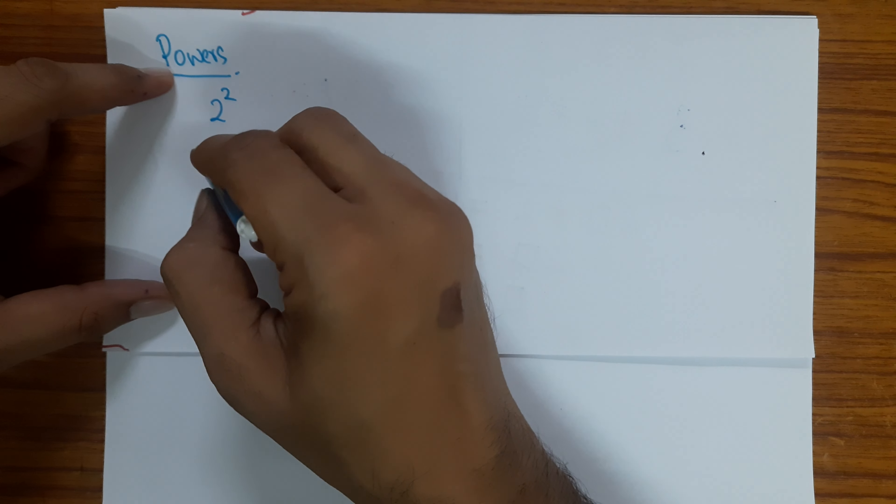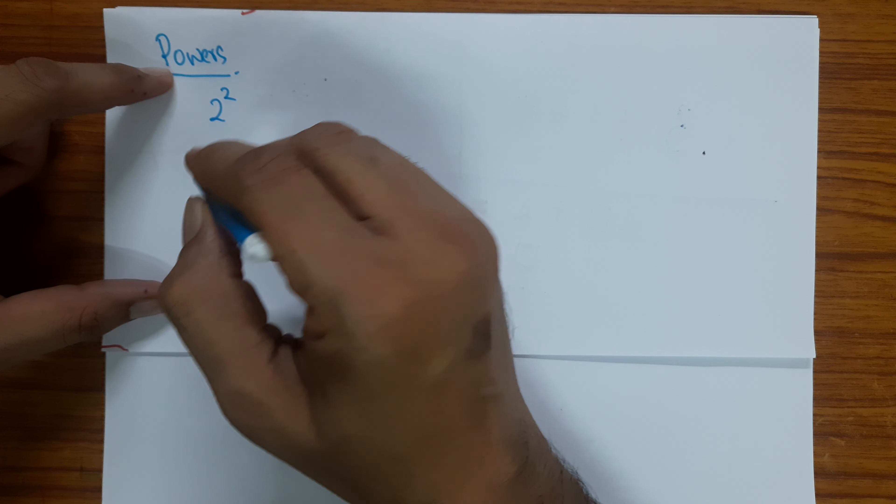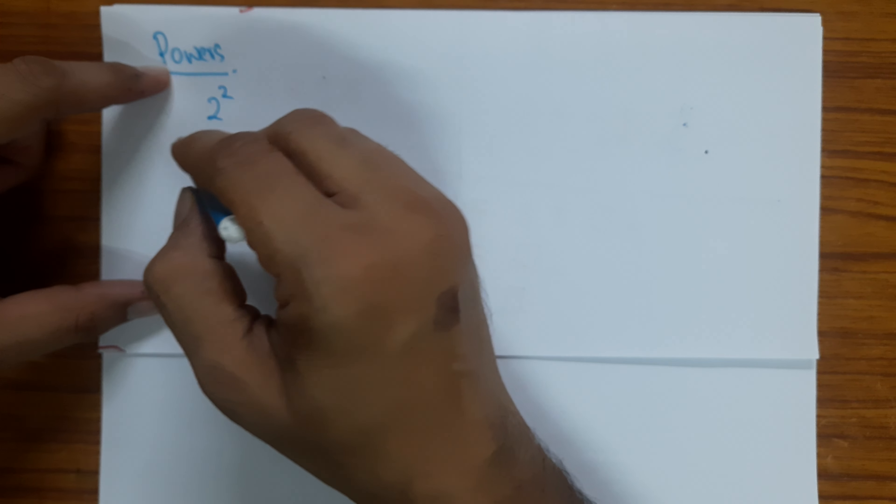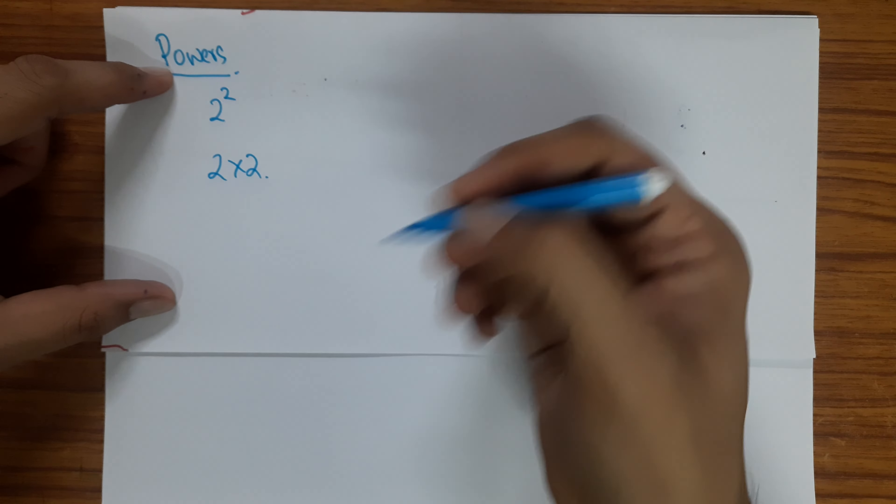So let's go actually one step back and think of the shortcut we have for addition. Multiple addition shortcut is multiplication. So what is it there? So if we say 2 times 2, this means...